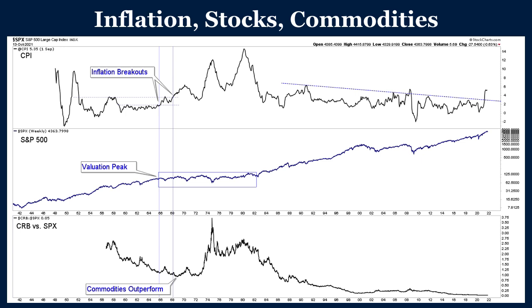This is something I've touched on months ago, so if you recall that video this may sound familiar, but I'm going to apply it to today. That is my historical analysis and what it can tell us about today in terms of answering the question. In this first chart we have a lengthy view of the CPI, the consumer price index, the S&P 500 in the middle, and at the bottom we have the CRB against the S&P — that's commodities against the stock market.